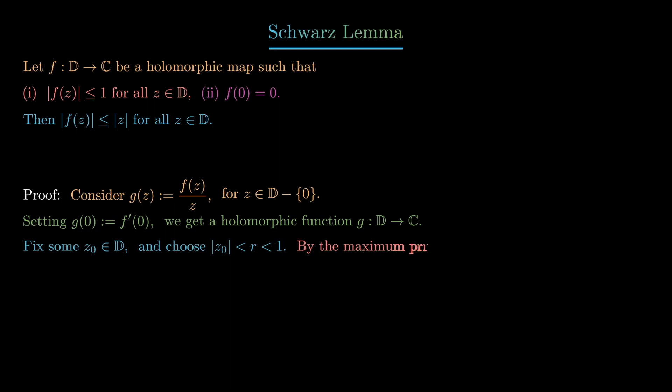By the maximum principle that we saw before, since g is holomorphic, g(z0) is less than or equal to the maximum of the absolute value of g(z), where the maximum occurs on the boundary of this neighborhood. The maximum is not over mod z less than or equal to r, but over mod z equal to r.